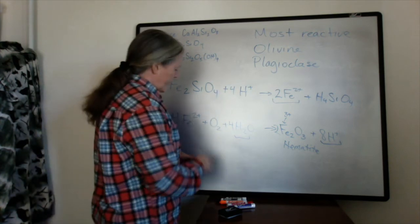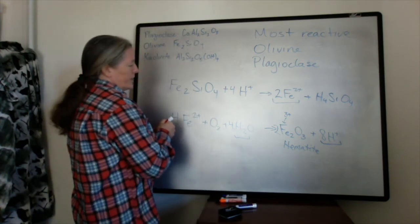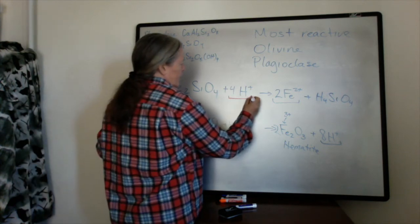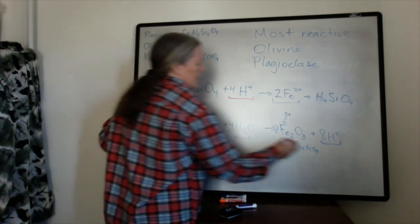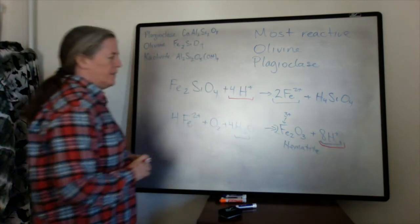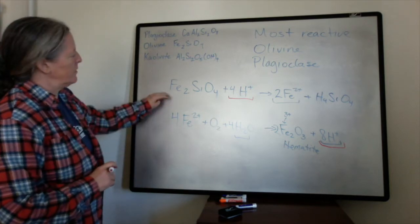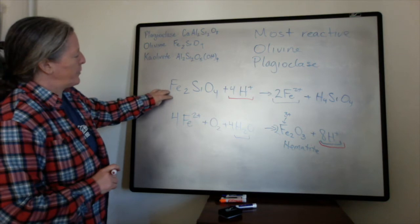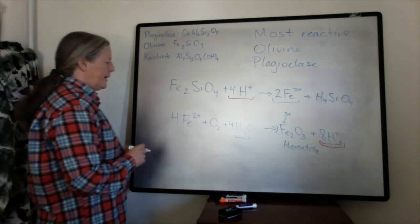If we look at the reaction of the olivine as a whole, this first part of the olivine weathering consumes protons and the second part produces them. So we can combine these two equations to have both the dissolution of olivine and the oxidation of iron.